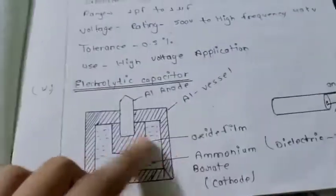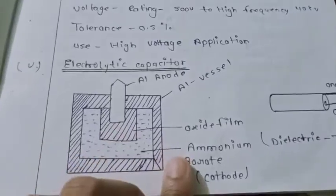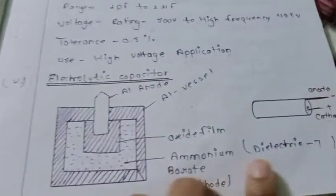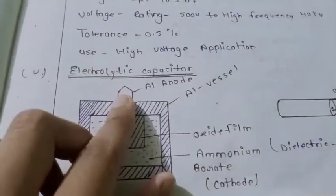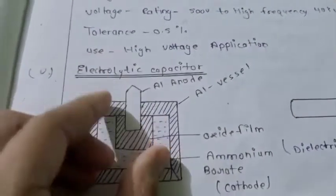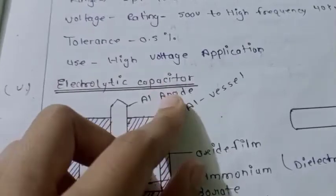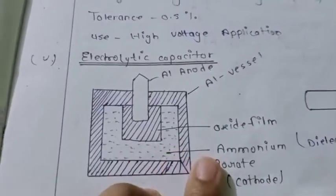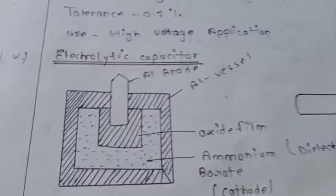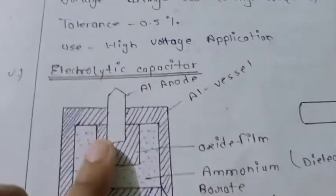Electrolytic capacitor uses aluminum anode and aluminum vessels with oxide film. Aluminum ammonium borate acts as the cathode.